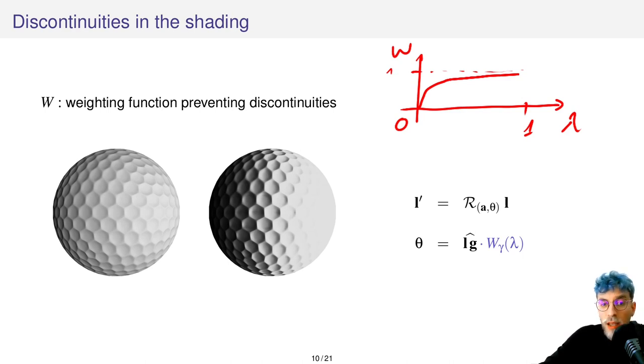So if lambda equals 0 or is near to 0, we should not rotate the light. But as soon as we deviate from 0, then we can start to enhance the shape.